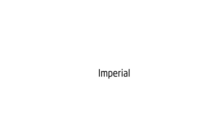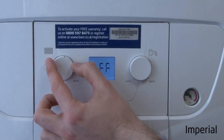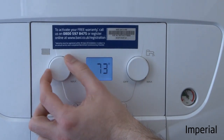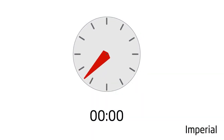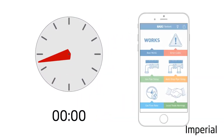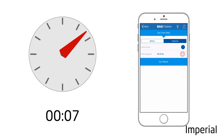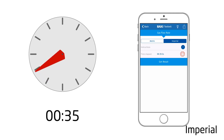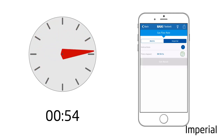If your gas meter is reading in Imperial then you should do as follows. Start the boiler on maximum workload, wait until the needle of the meter is in the 12 o'clock position and start the timer. Once the needle has completed the full rotation and returned to its start point, stop the timer and press get results.